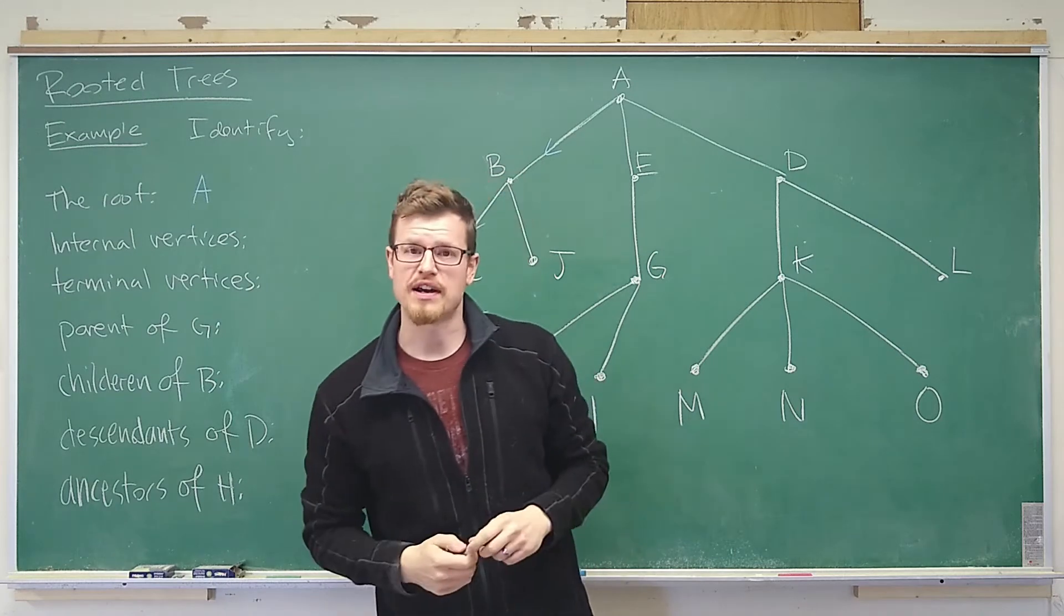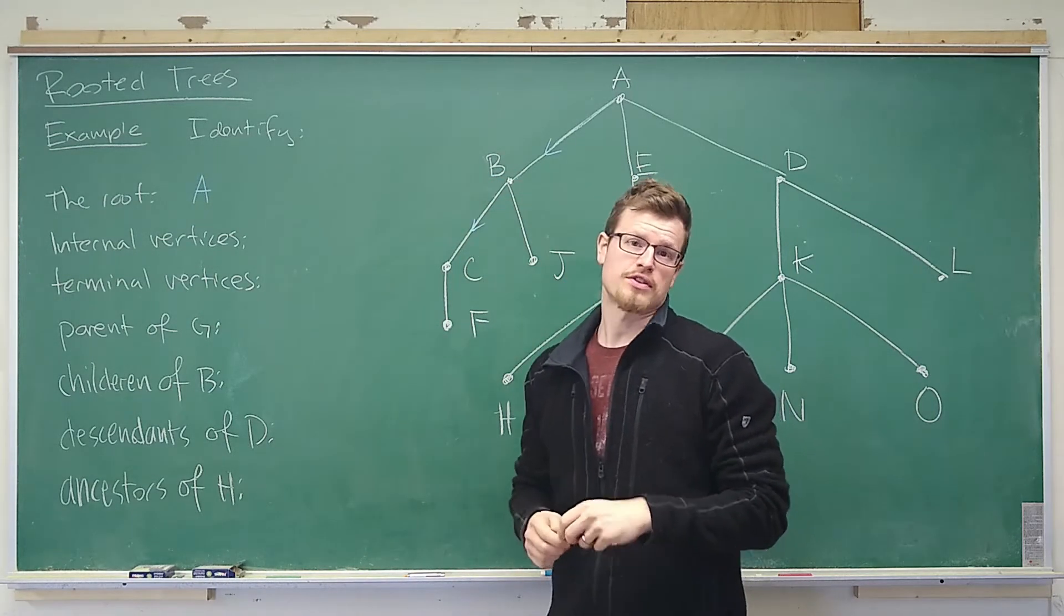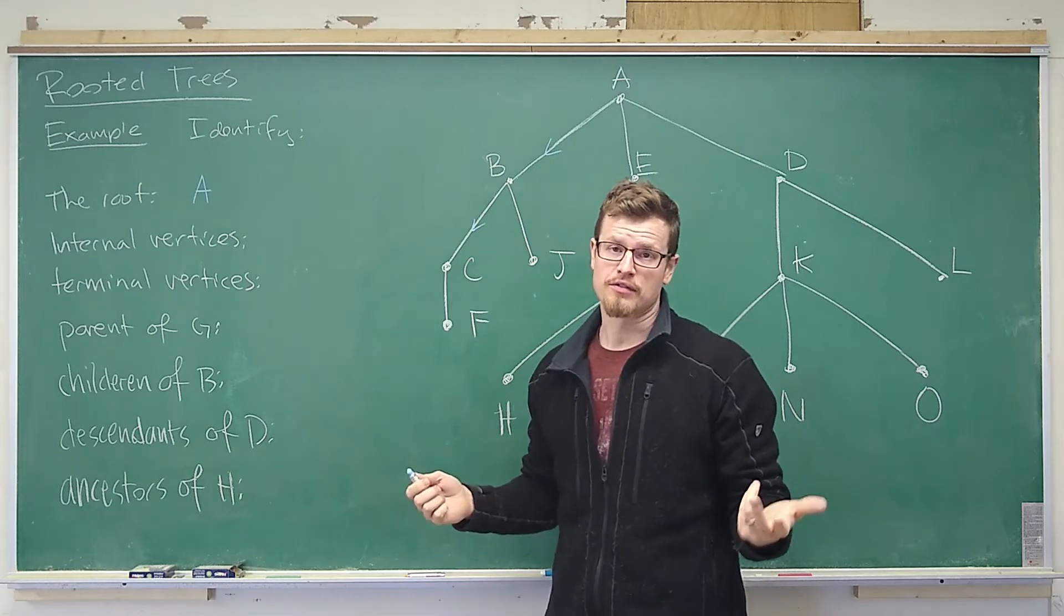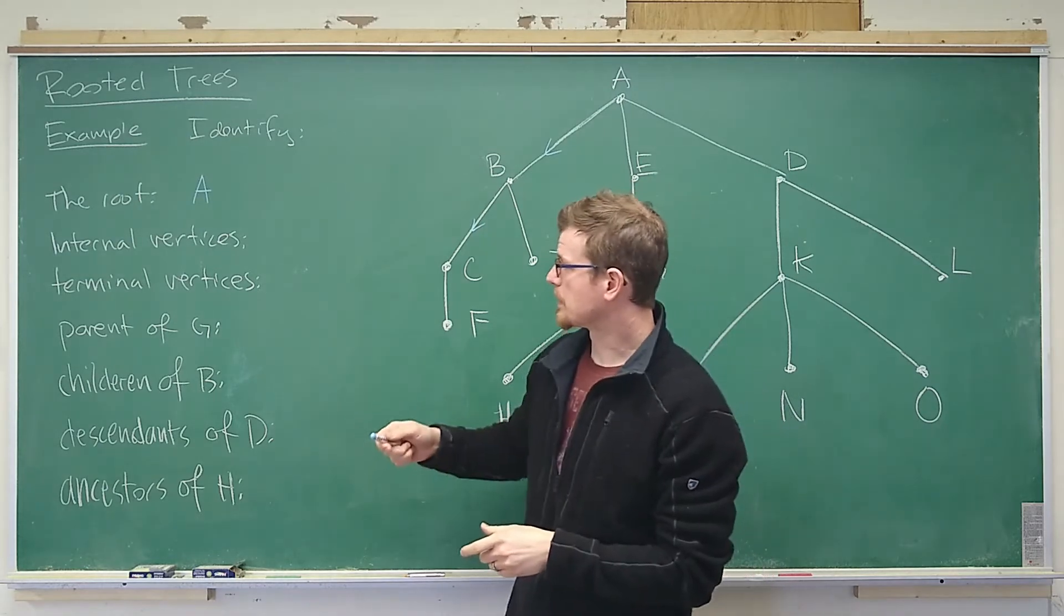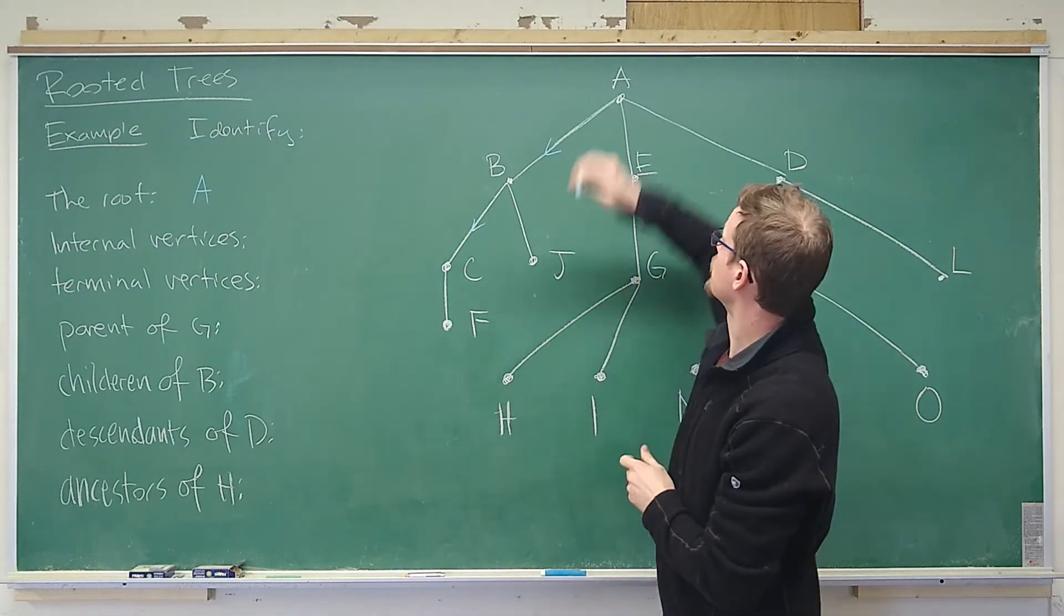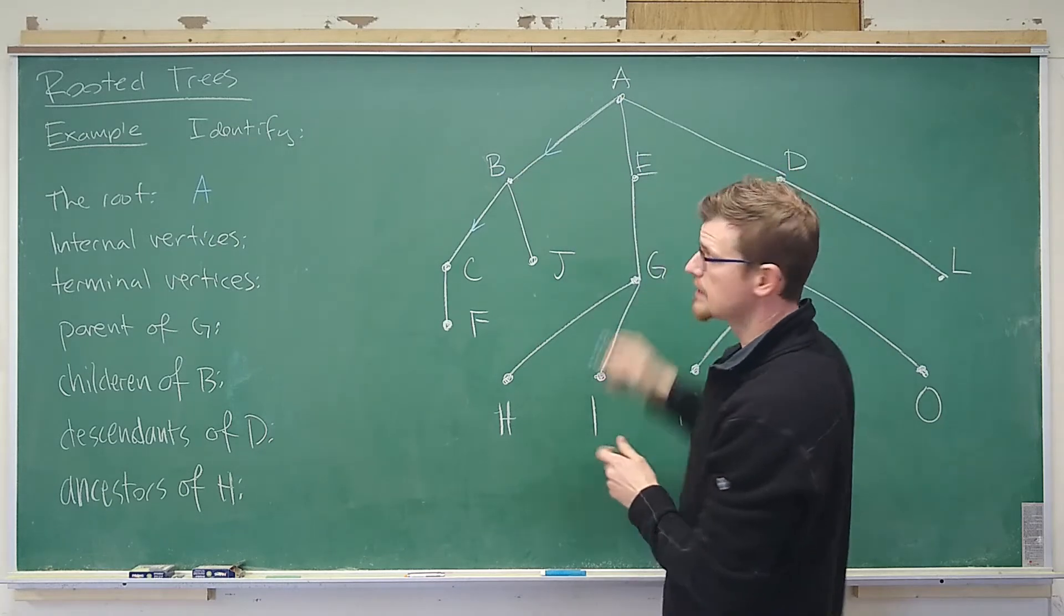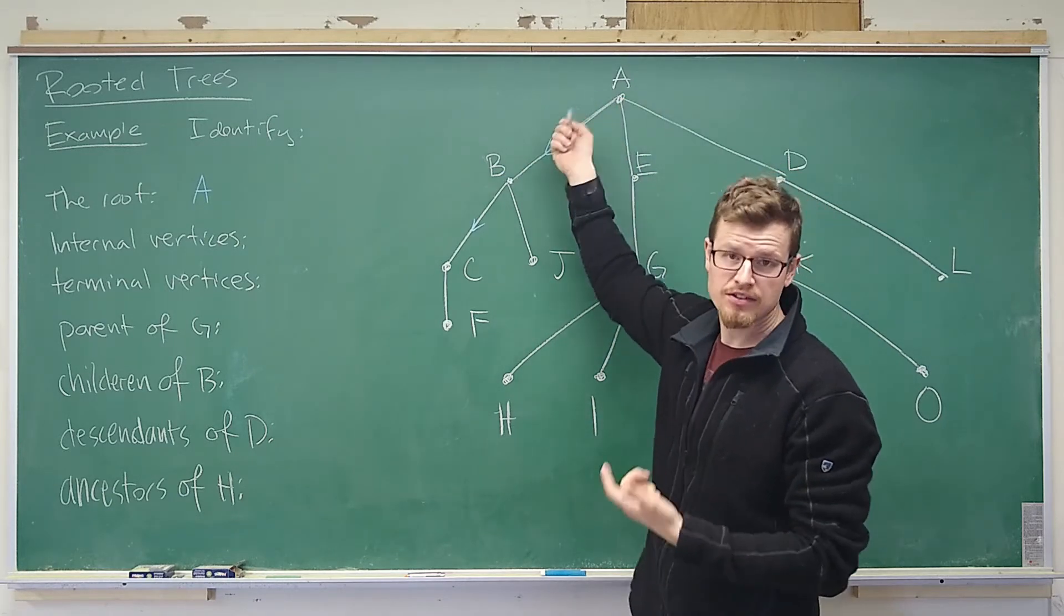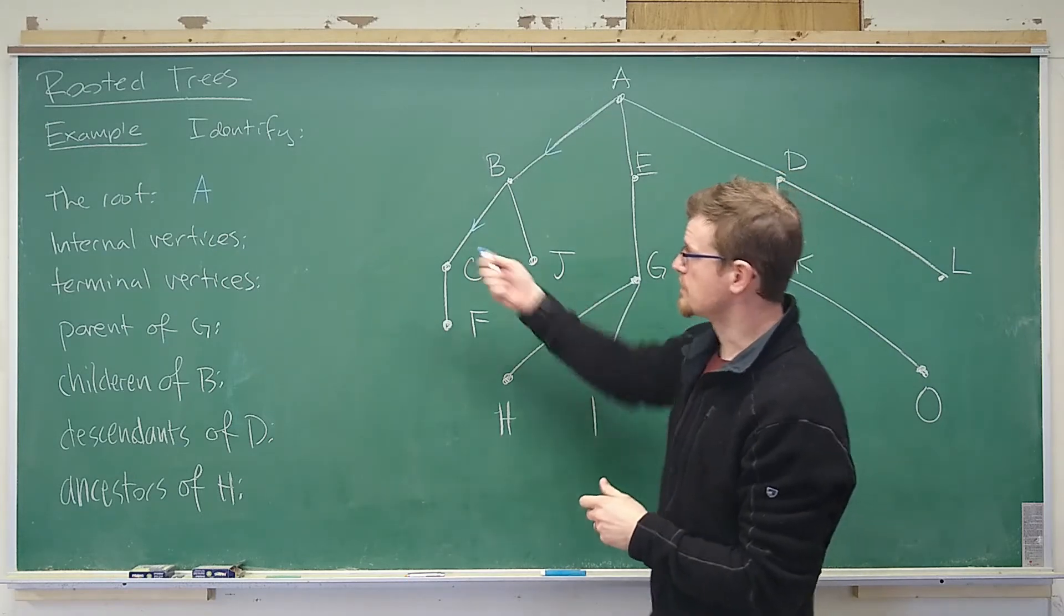Then we want to identify the internal vertices. Now the internal vertices are simply vertices that have children or that have a vertex that comes after. So we have to have the idea of children. So for example a has children b, e, and d. So we know that a is an internal vertex because it has children. So as long as it has children it's an internal vertex.